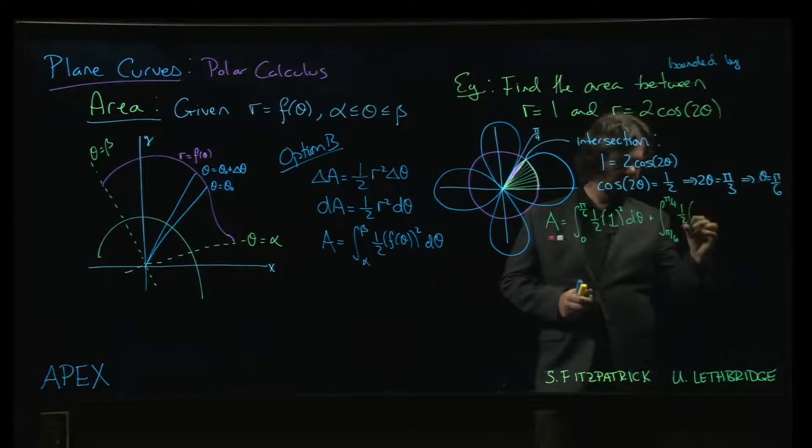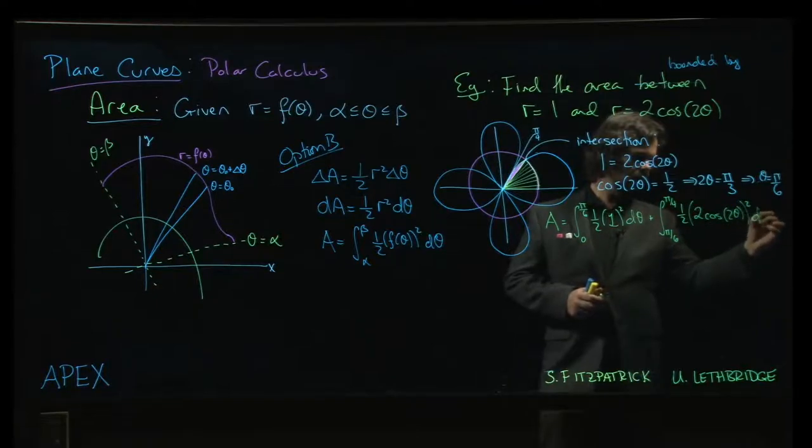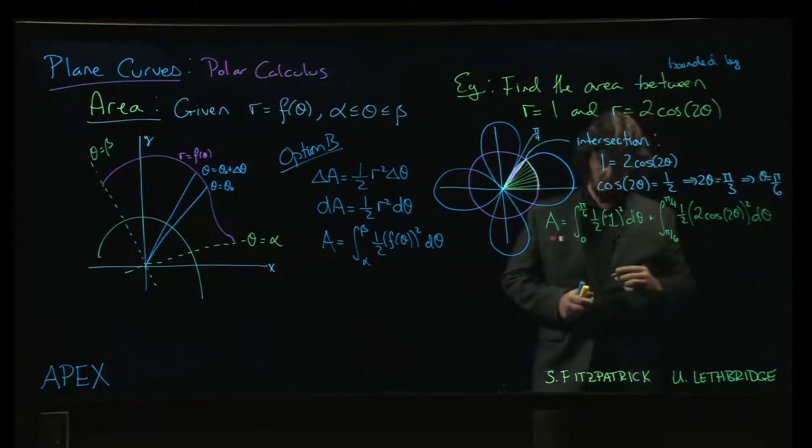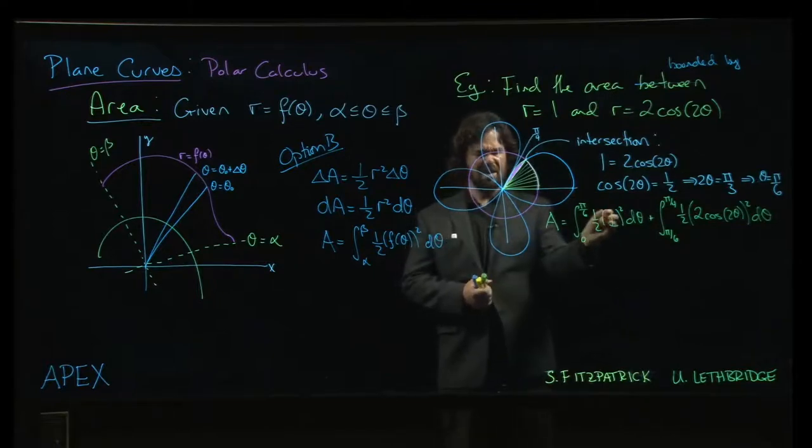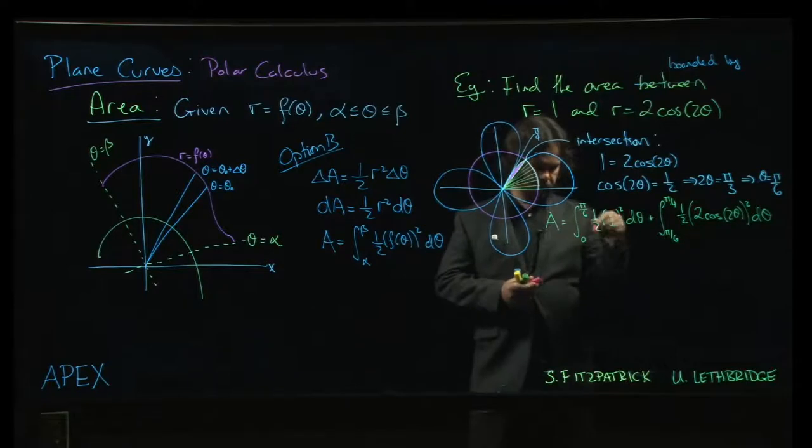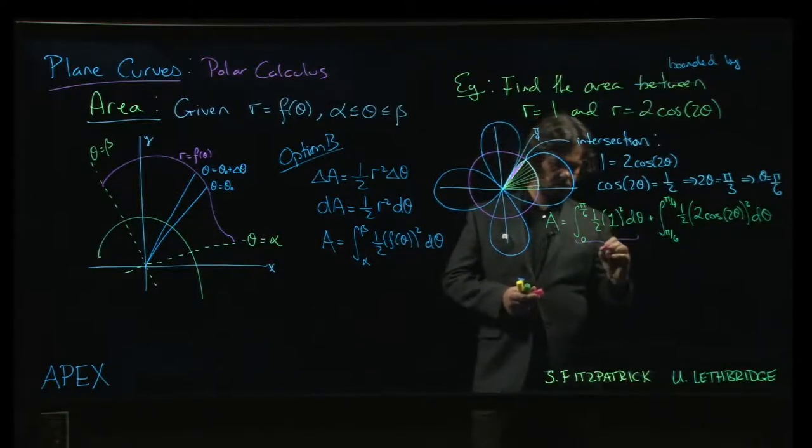And then we go from pi over 6 to pi over 4, 1 half of, so 2 cos 2 theta. And we're going to square that whole thing. Now, that's easy. It's just 1 half times the length of the integral. So 1 half of pi over 6. That's pi over 12.